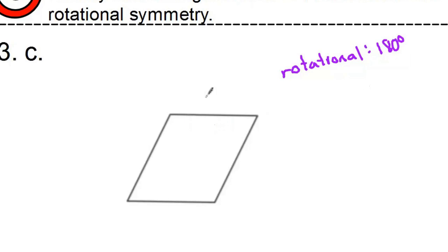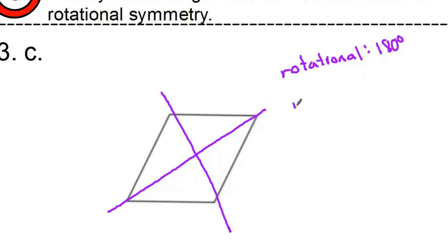Reflectional-wise, I can't divide it in half these ways. I can go through the diagonals. I can go like this and fold it, and I can also go like that. So the reflectional symmetry is going to be two lines.